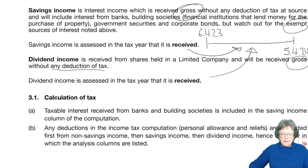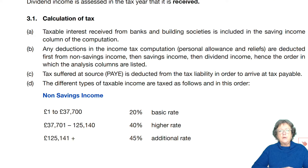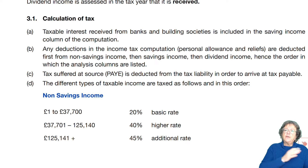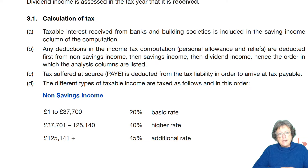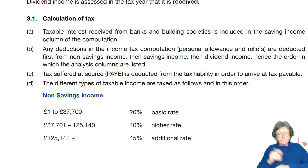Taxable income received from banks and building societies is included in the savings income column in the computation. You're unlikely to get personal allowances coming this far if the individual has a salary, but if there is some spare personal allowance, then that can be deducted from that income. The order is non-savings, then savings, then dividends — very important.